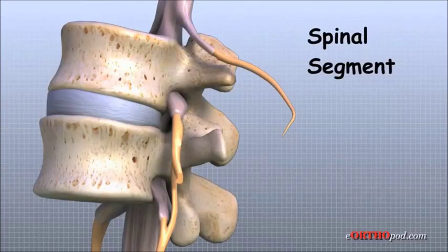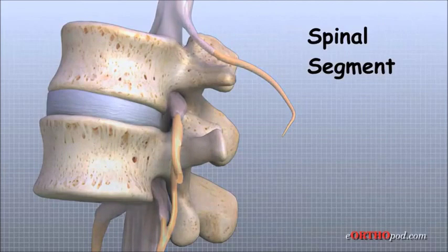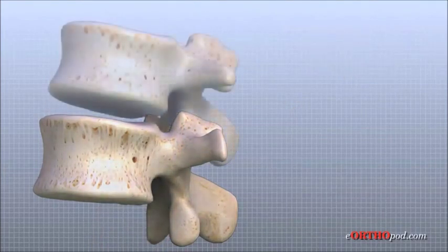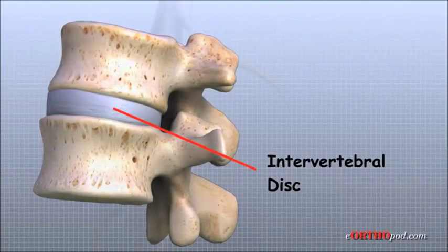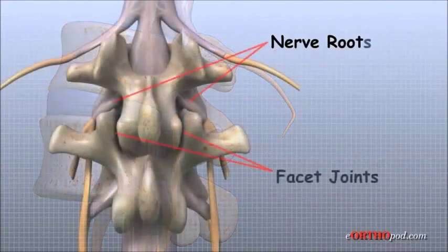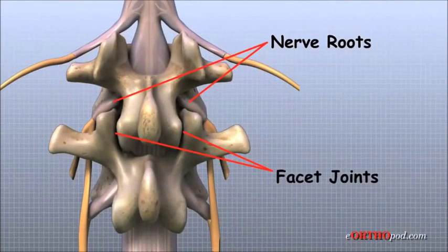It is sometimes easier to understand what happens in the spine by looking at a single spinal segment. The spinal segment includes two vertebrae, the intervertebral disc between, the two nerve roots that leave the spinal cord at that level, and the small facet joints that link each level of the spinal column.